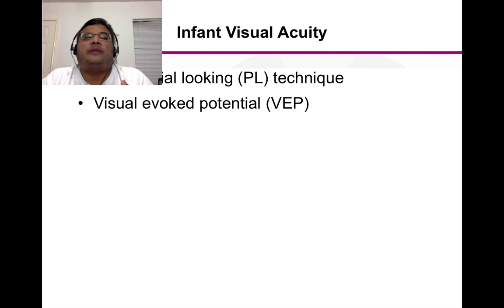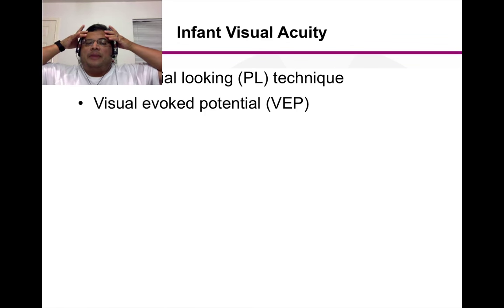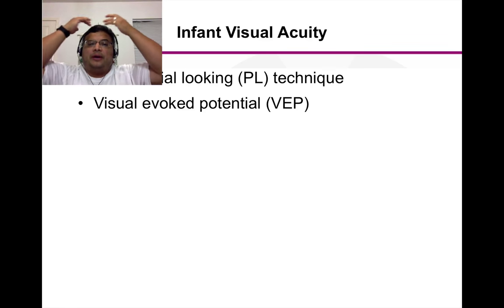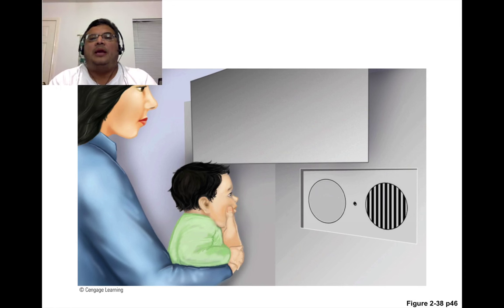The other way is through a visual evoked potential. We can do brain recording by basically putting a little cap on a baby that has electrodes all around. And there are certain electrical signals, brain waves, that are emitted when visual information is getting processed. And we can measure those in babies.